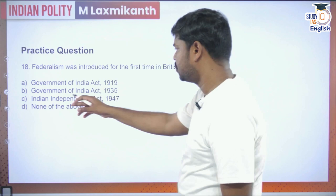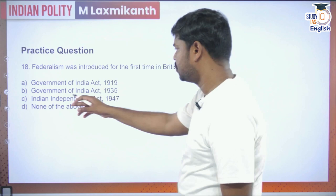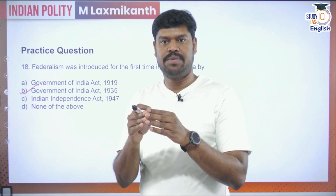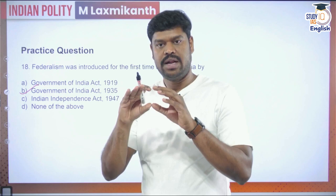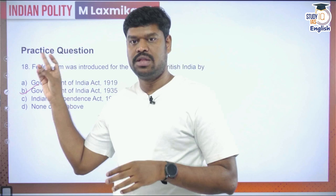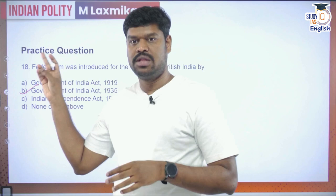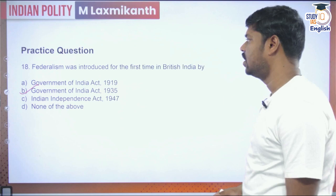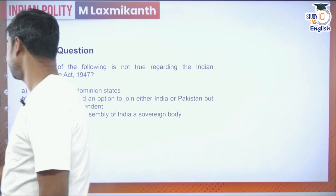Question 18: Federalism was introduced for the first time in British India by which act? It was introduced by the Government of India Act 1935, which for the first time distributed power between provinces and the Centre through three lists: provincial list, concurrent list, and federal list. Note that GoI Act 1919 did provide some demarcation of subjects, but only through devolution or delegation by the central authority — not through statutory backing. Federalism proper came only through GoI Act 1935.